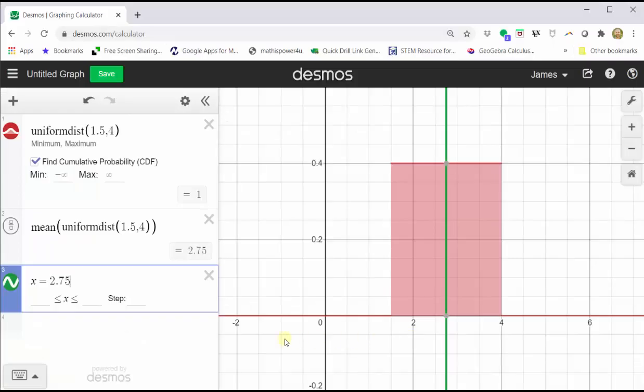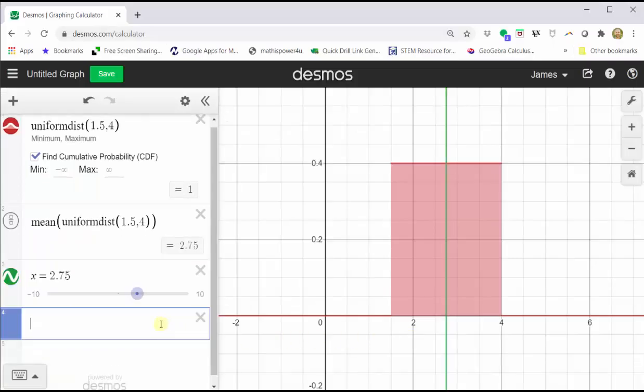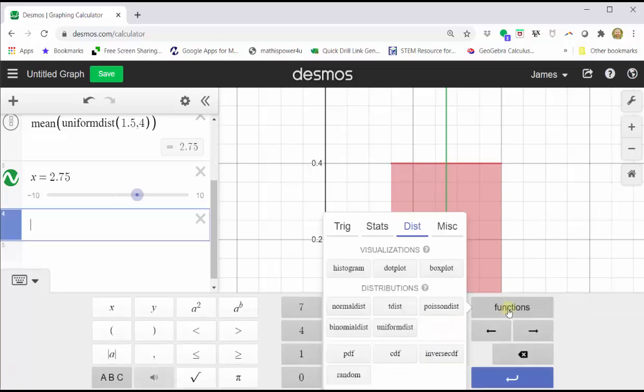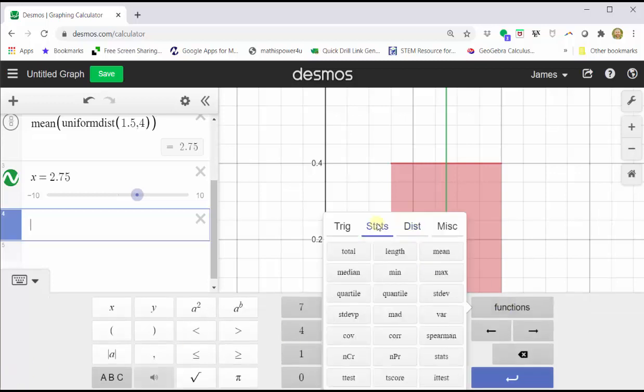Let's go back to the graph. Let's click in cell four. Click show desmos keypad. Click functions. Click stats. Click standard deviation, which is S-T-D-E-V.